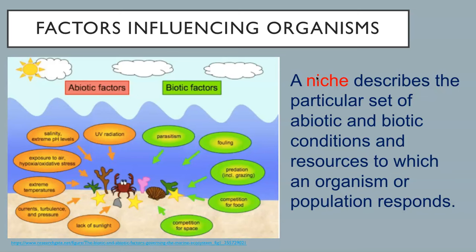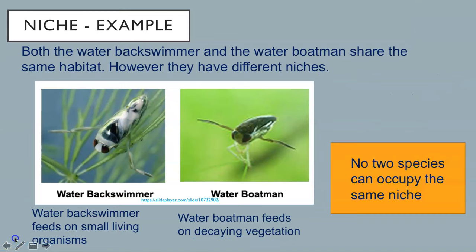Let's look at an example. Both the back swimmer and the water boatman share the same habitat. However, they have different niches. The water back swimmer feeds on small living organisms, while the water boatman feeds on decaying vegetation. They have different roles in the habitat. The way they respond to abiotic and biotic conditions and resources within the habitat are different.